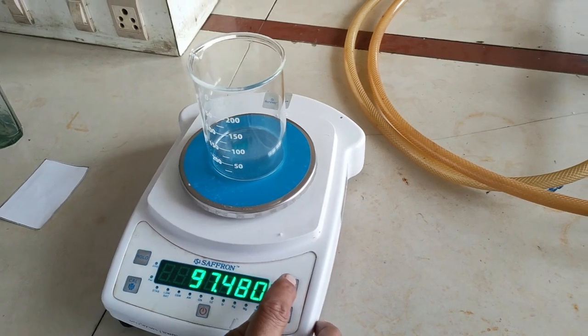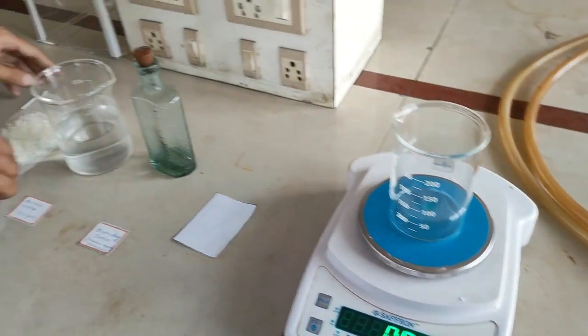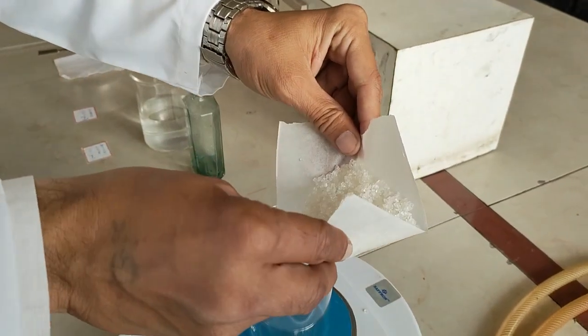We are going to make it zero by taring. Now we are going to put 66.7 grams of sucrose in the beaker.